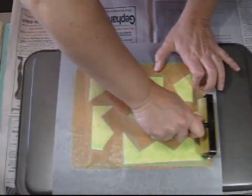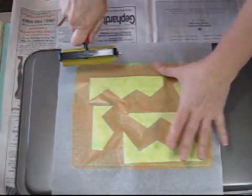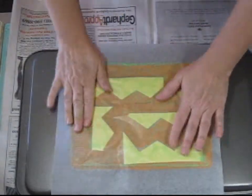And you can see since it is kind of bumpy, I'm going to use the brayer and go over it just to make sure that I get a good contact on the deli paper. And I lift it up.